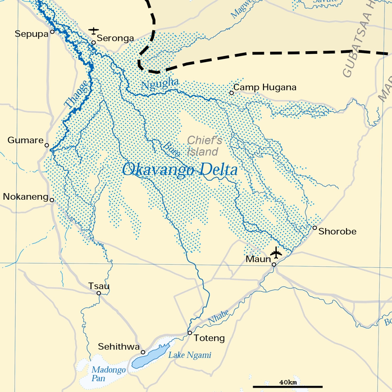The Seven Natural Wonders of Africa were officially declared on February 11, 2013, in Arusha, Tanzania. On 22 June 2014, the Okavango Delta became the one-thousandth site to be officially inscribed on the UNESCO World Heritage List.